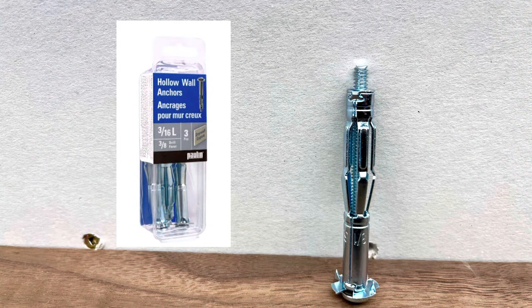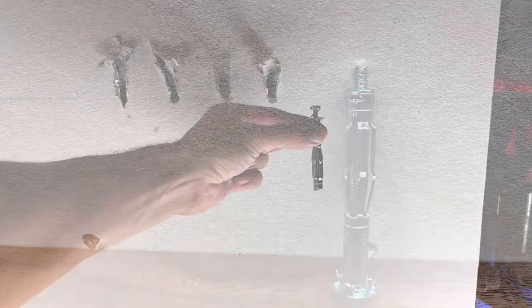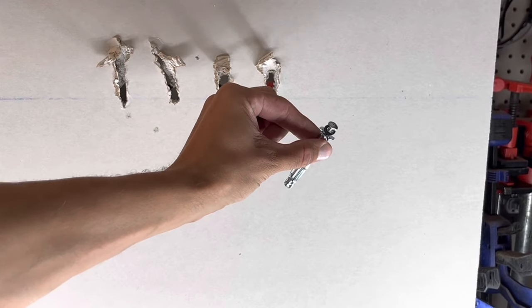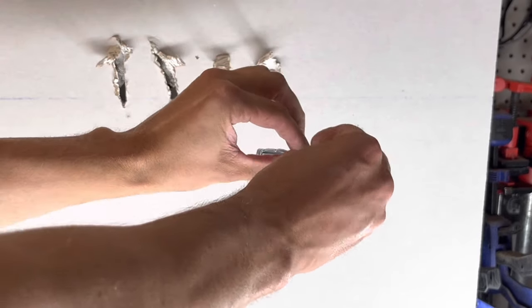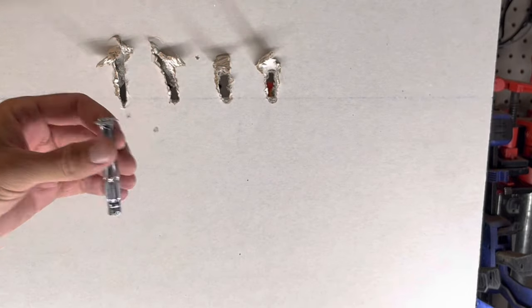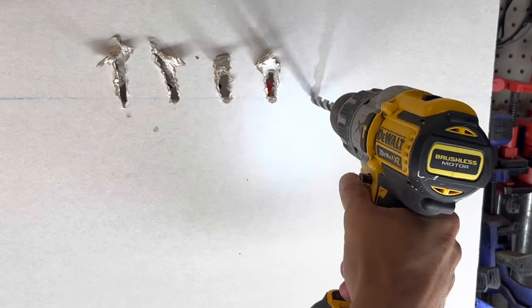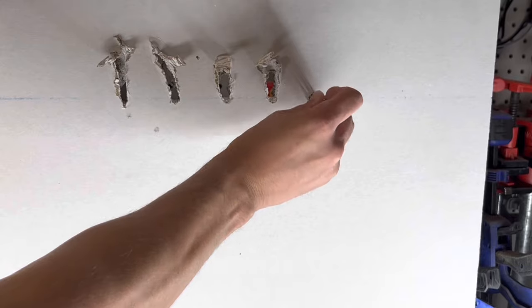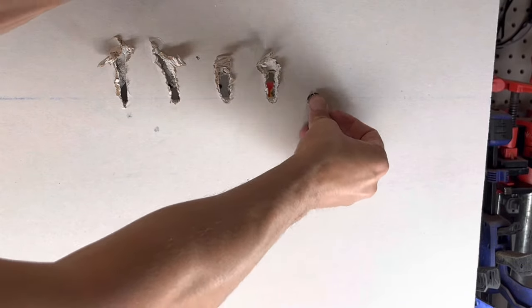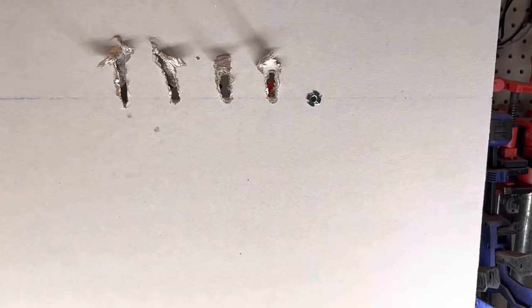This large metal anchor is just called a hollow wall anchor. It also has a version available for masonry. This one is for drywall. It has a center bolt that separates into two pieces. It does require a 3/8 hole drilled prior to pushing it in flush. Once the hole is drilled, the piece without the bolt simply pushes in until it's completely flush with the wall.